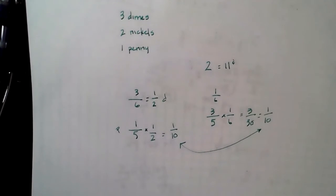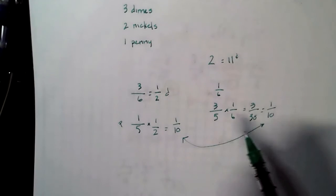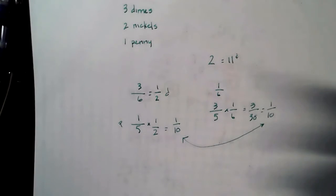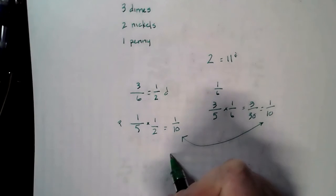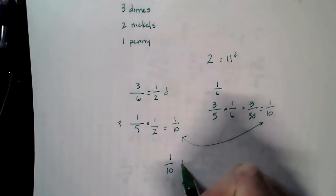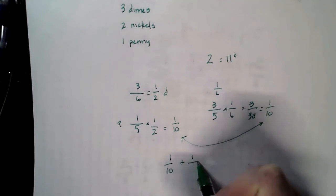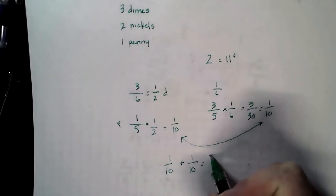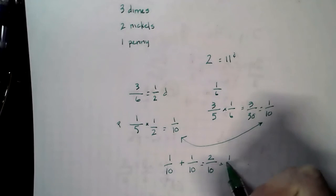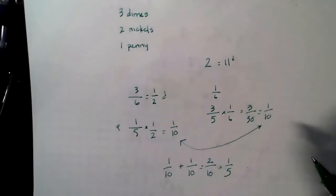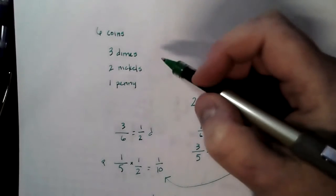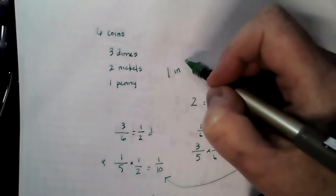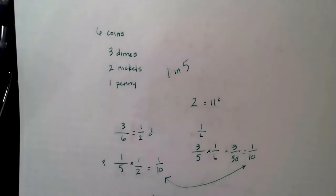The last step we're going to do, because we're talking about two different things coming out of this pocket, we are going to add these two fractions together or these two ratios. So 1/10 plus 1/10 equals two-tenths, which reduces to one-fifth. This means we have a one in five chance of pulling a dime and a penny at the same time out of six coins.